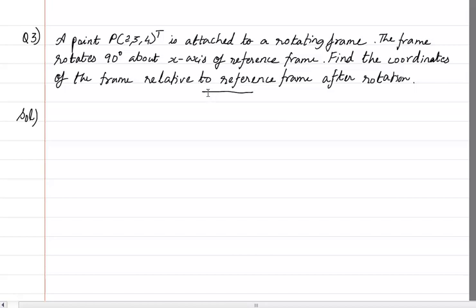Let's look at an example. A point P = (2, 3, 4) transpose, that means it can be written as a vector. So (2, 3, 4) is attached to a rotating frame. The rotating frame is not a reference frame — rotating frame means NOA. So the point P is attached to that frame.